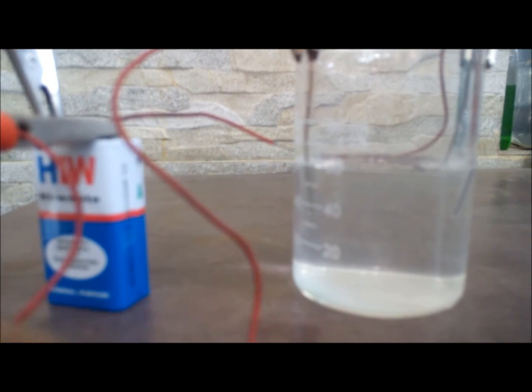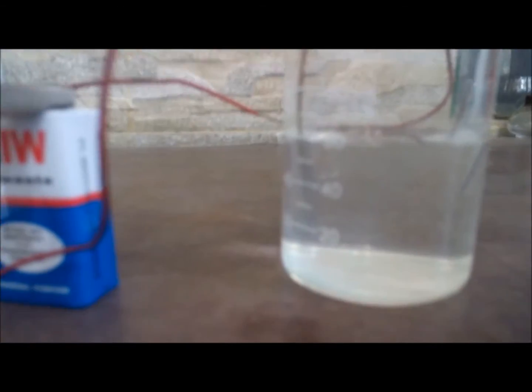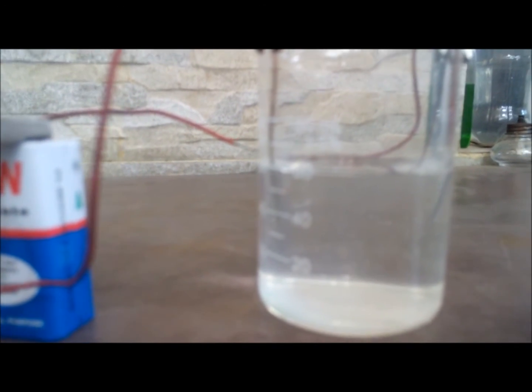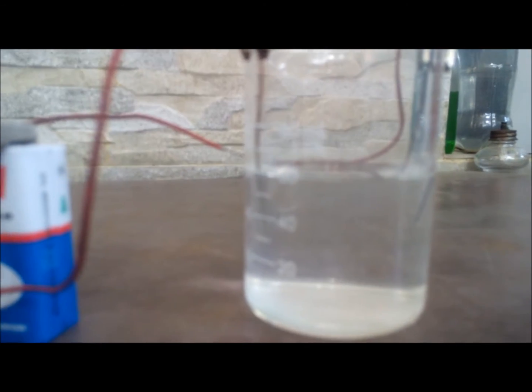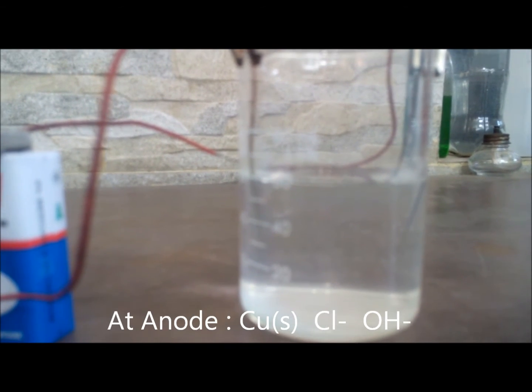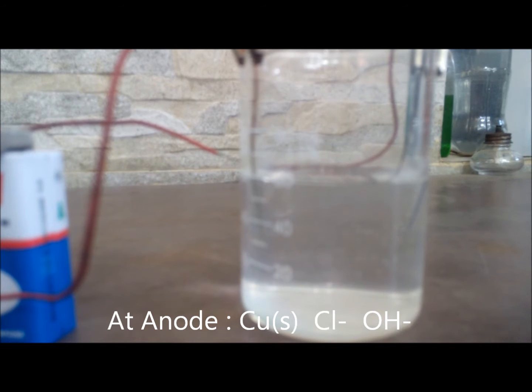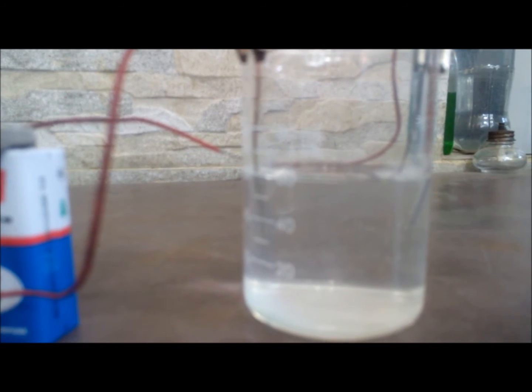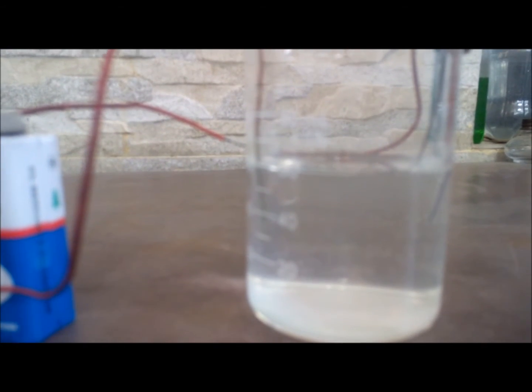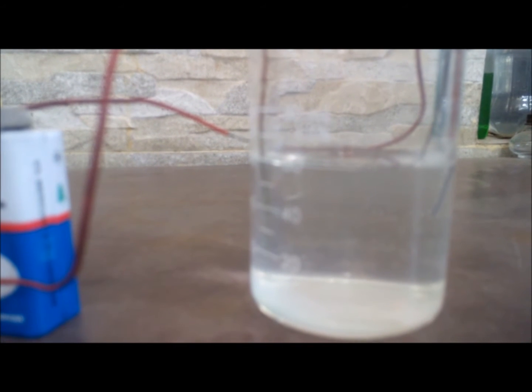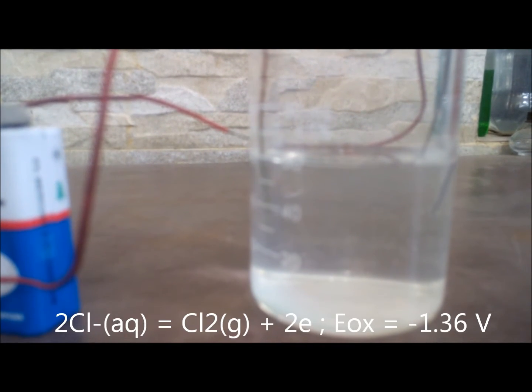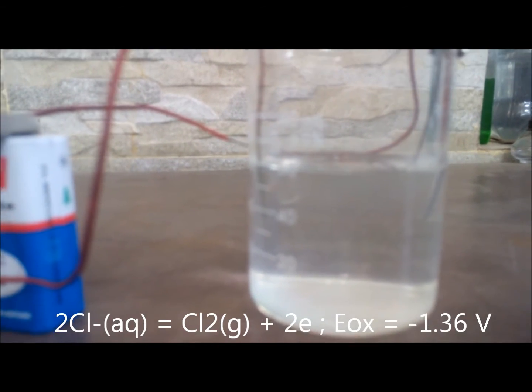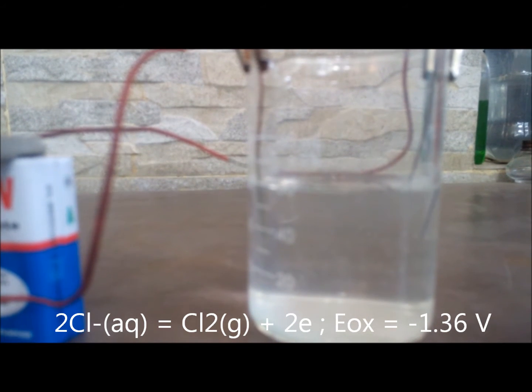Now let's come back to the anode. The anode will have copper from the electrodes and OH- ion and Cl- ion. So let's see the reactions. Cl- is generally oxidized to Cl2 gas in the salt water electrolysis.